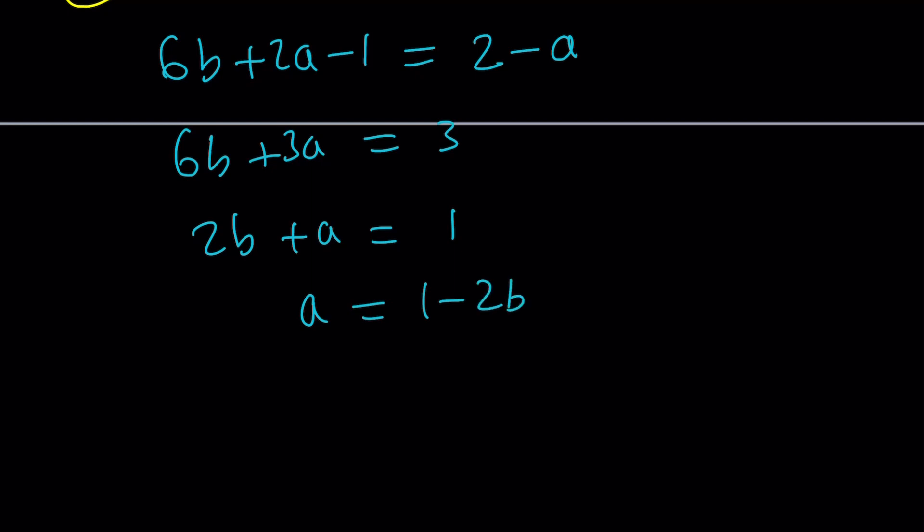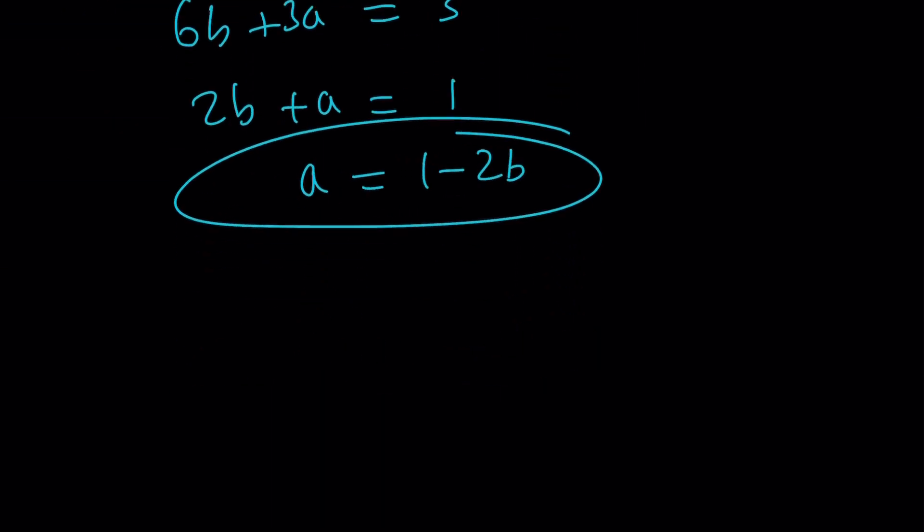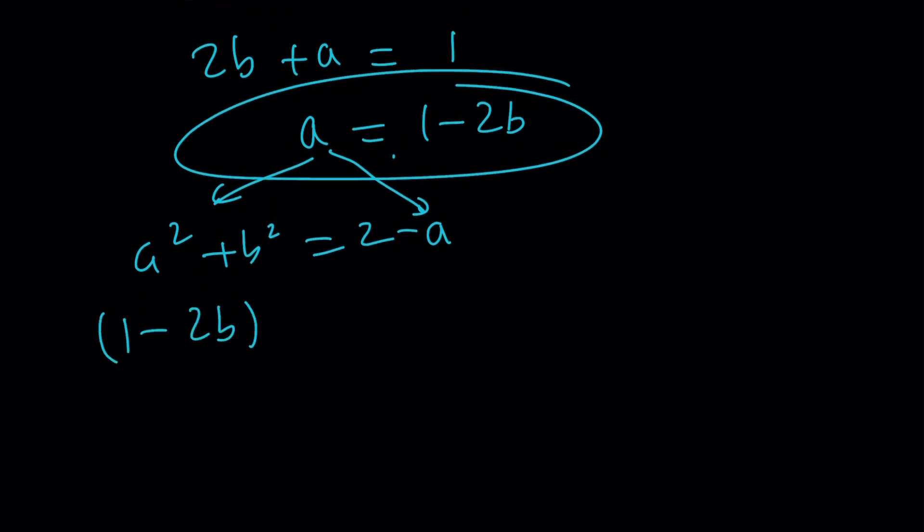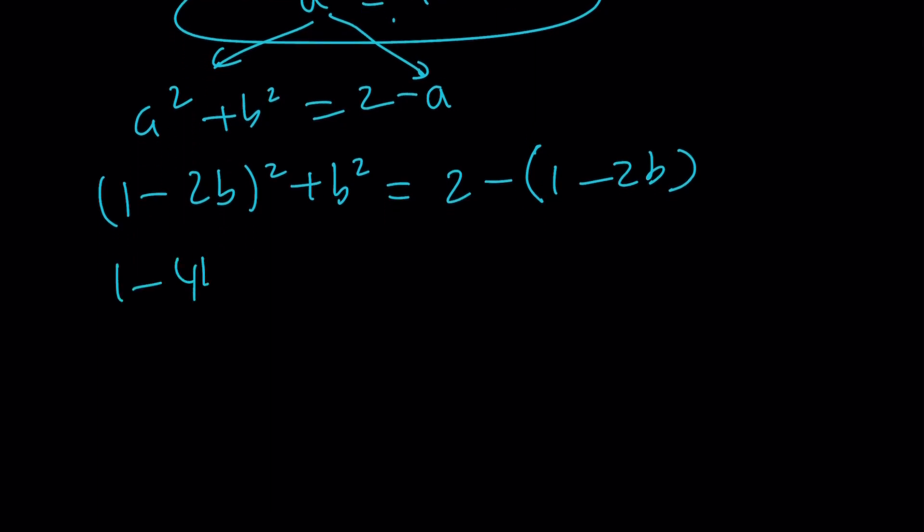Now, we can use any of these equations. The first one looks a little simpler. Let's use A squared plus B squared is equal to 2 minus A. And let's replace A with this. So that's going to give me 1 minus 2B squared plus B squared equals 2 minus 1 minus 2B. Make sure to use parentheses if you're subtracting an expression. Let's expand the left-hand side. 1 minus 4B plus 4B squared plus B squared. That's going to give us a 5B squared. This is going to give me 1 plus 2B.